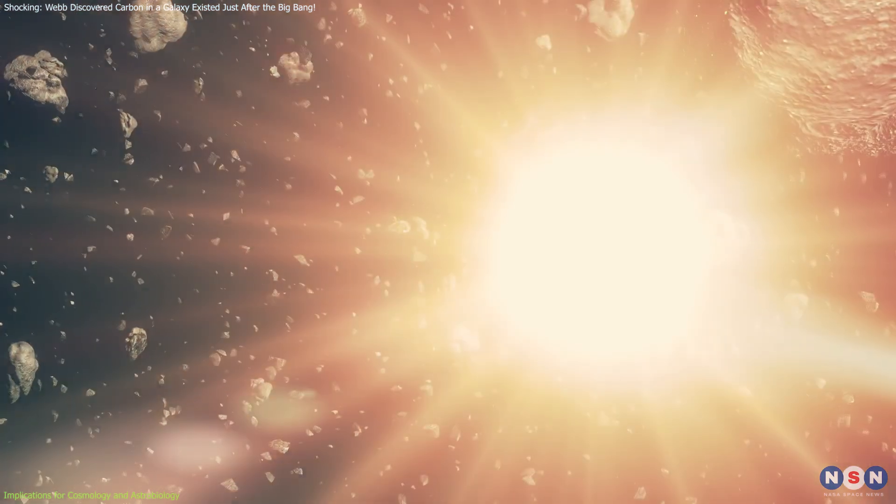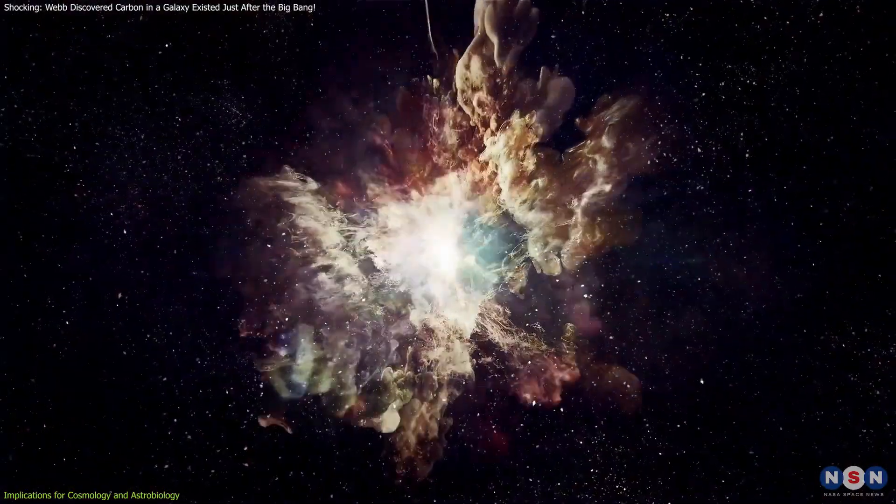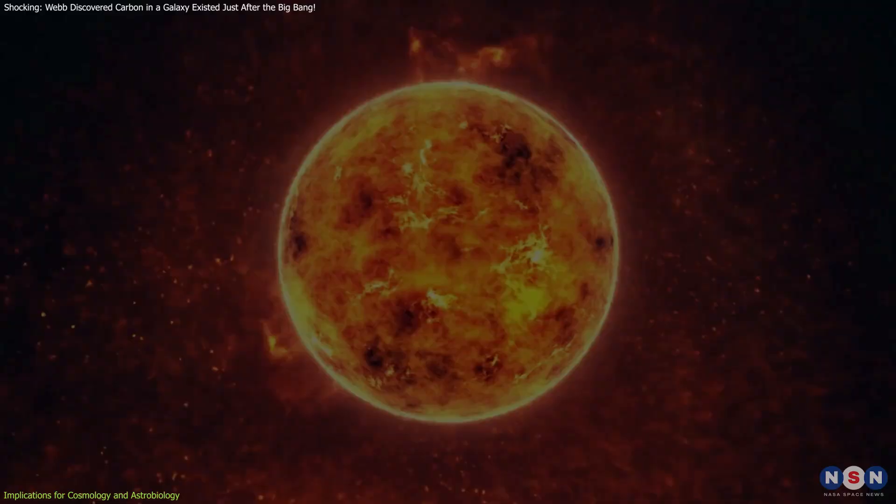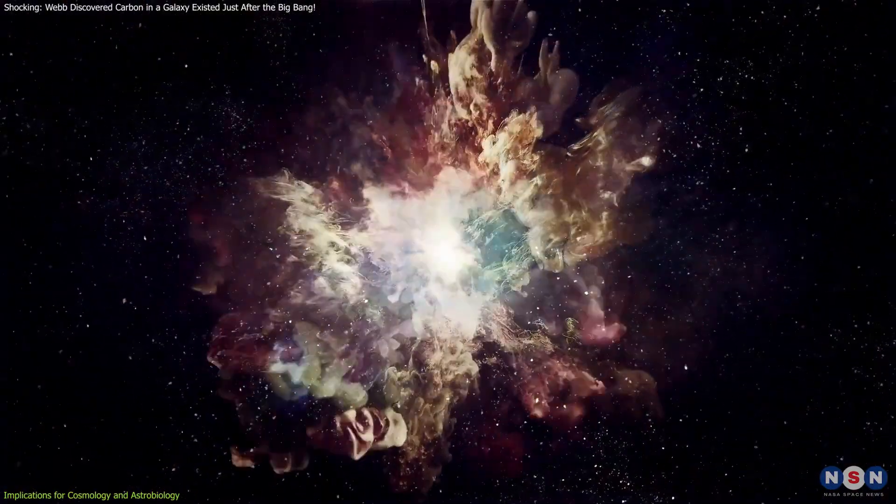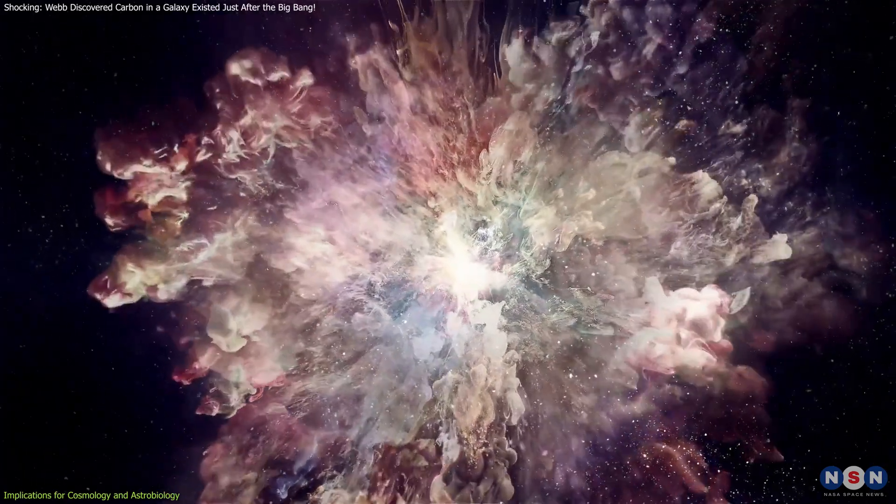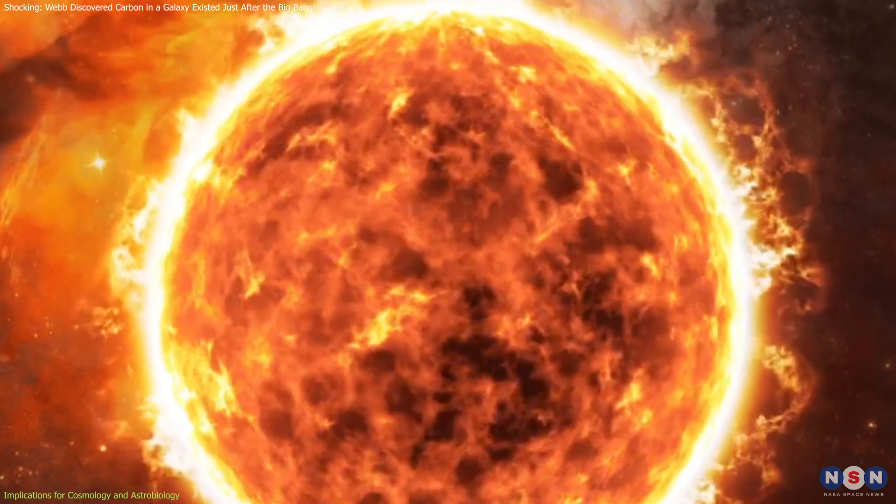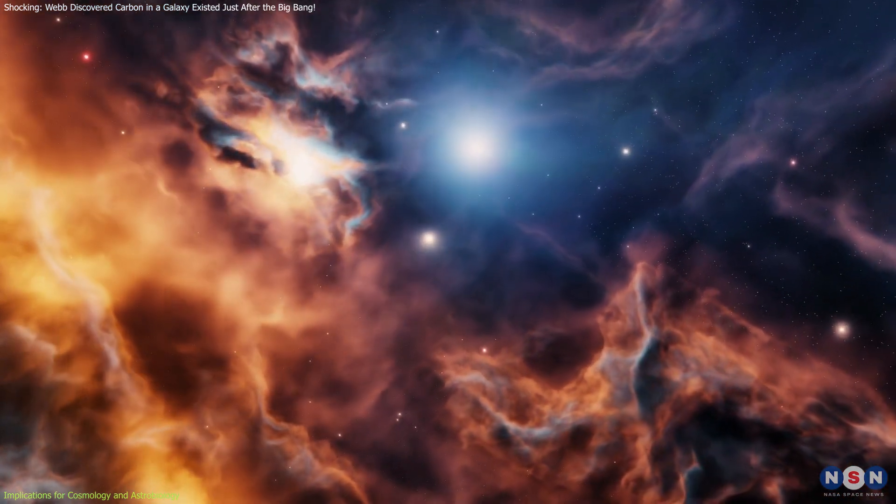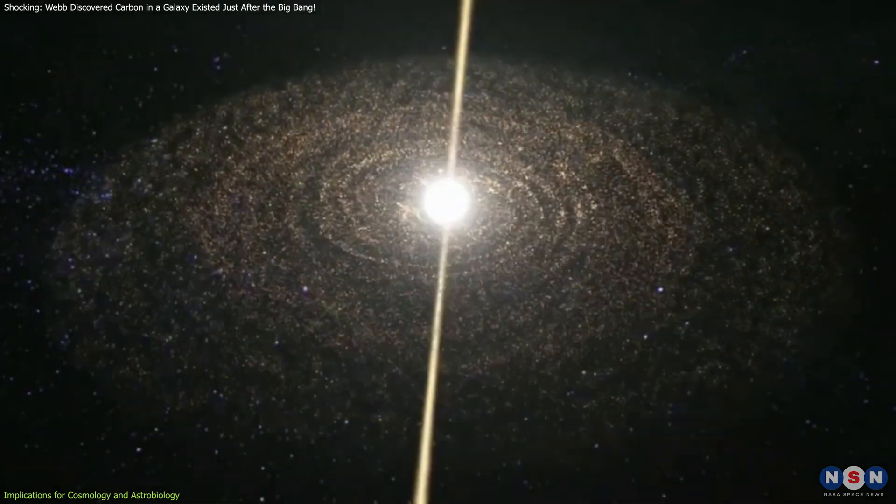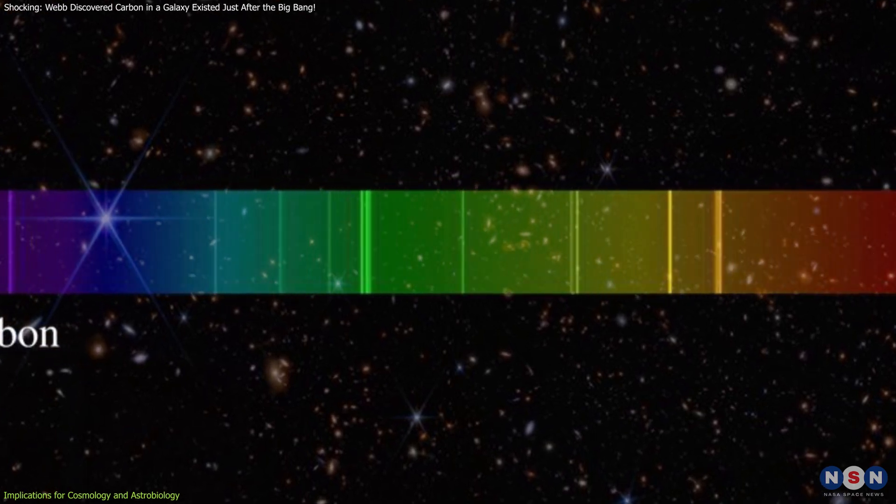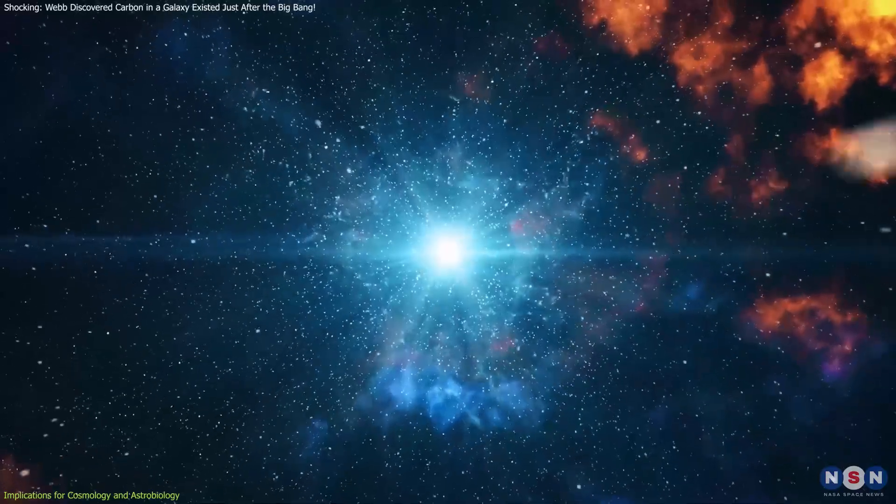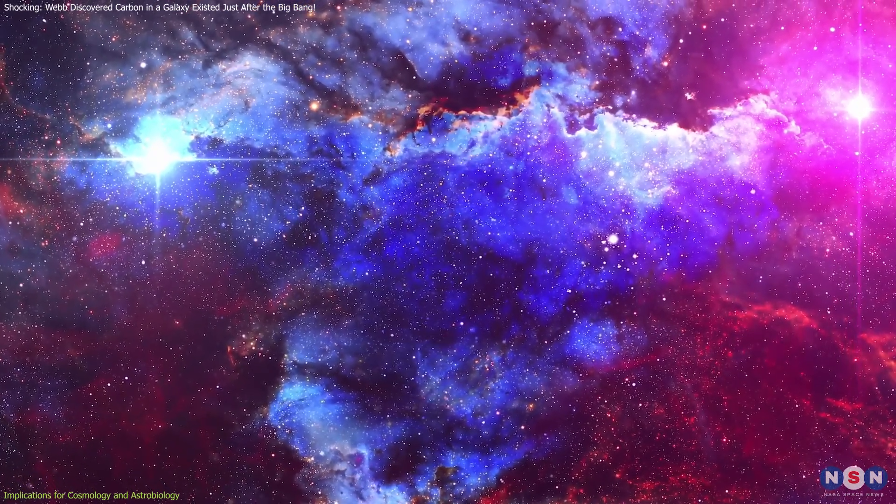This leads to the role of supernovas in element dispersal. Supernovas are critical in dispersing elements like carbon throughout the universe, essential for galactic chemical enrichment. The nuclear reactions during these stellar explosions produce heavy elements such as carbon. The explosive processes scatter these elements into space, highlighting the importance of supernovas in producing carbon at a very early stage in the universe's history. By tracing carbon's journey from stellar cores to interstellar space, we gain insights into how these elements are incorporated into new stars and planets, ultimately providing the raw materials for new star and planetary system formation. The discovery of early carbon challenges traditional models, leading scientists to consider alternative scenarios for early star formation and the processes that led to rapid chemical enrichment. The presence of carbon early on hints at feedback loops, where the effects of newly formed elements influence subsequent star formation and galactic structure.